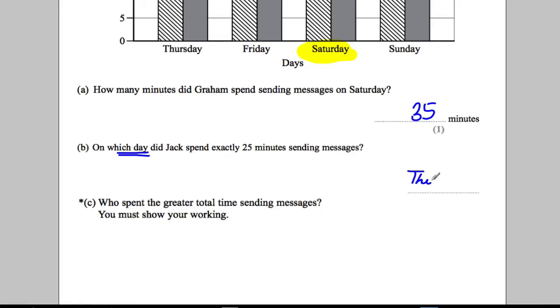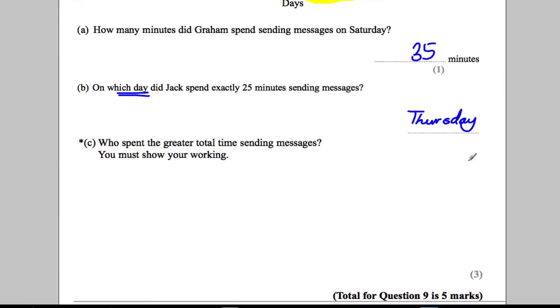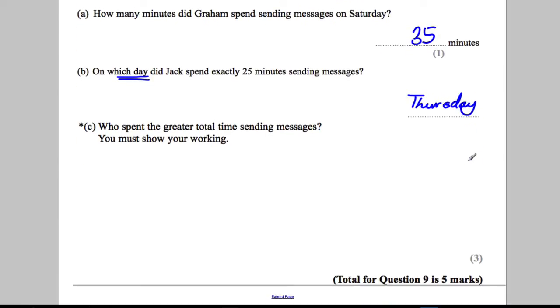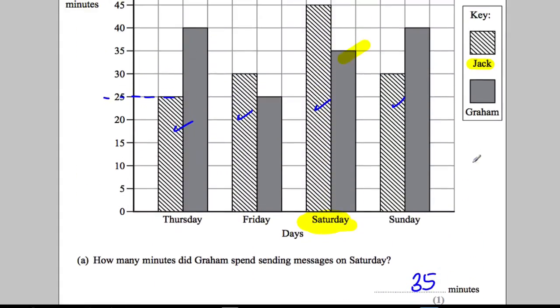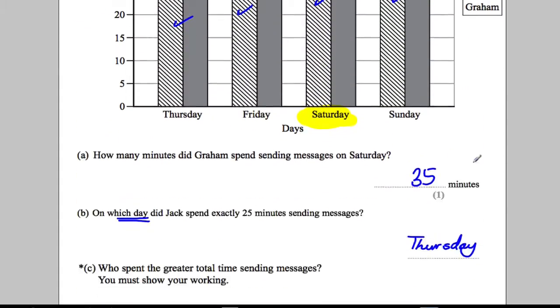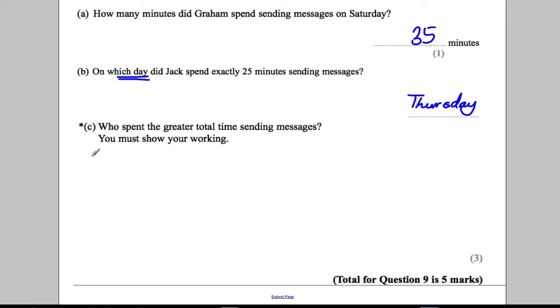And part C, which is a star question, which means you must show your working. You must lay out your working properly and show your communication skills. Who spent the greater time sending messages? What I would do is work out Jack and Graham separately. So let's do Jack first.